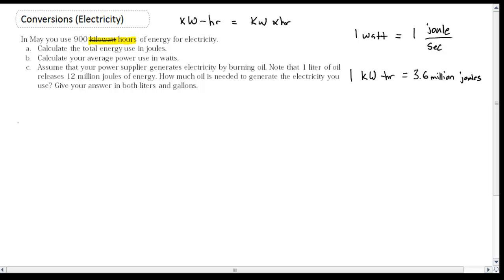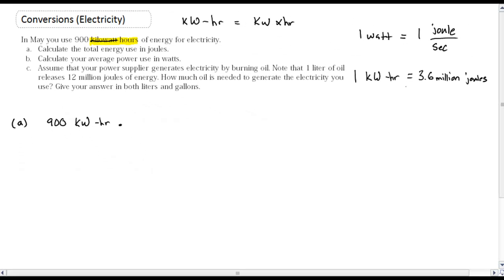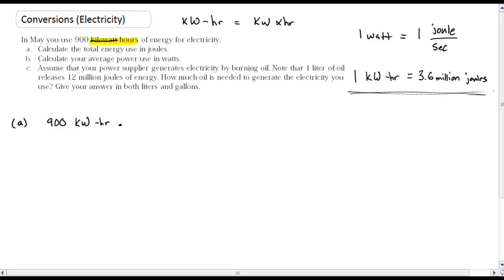Alright, so now we can tackle these problems having those handy. So A, calculate the total energy use in joules. Okay, so I have 900 kilowatt hours, and I want to go to joules. Oh, well here's this nice conversion right here. Okay, so kilowatt hours should go on bottom. So 1 kilowatt hour is equal to 3.6 million joules. So kilowatt hours cancel. 900 times 3.6 million, that's going to turn out to be 3,240,000,000 joules. So just a J for joules. So that's my answer to A. So a lot of joules here.